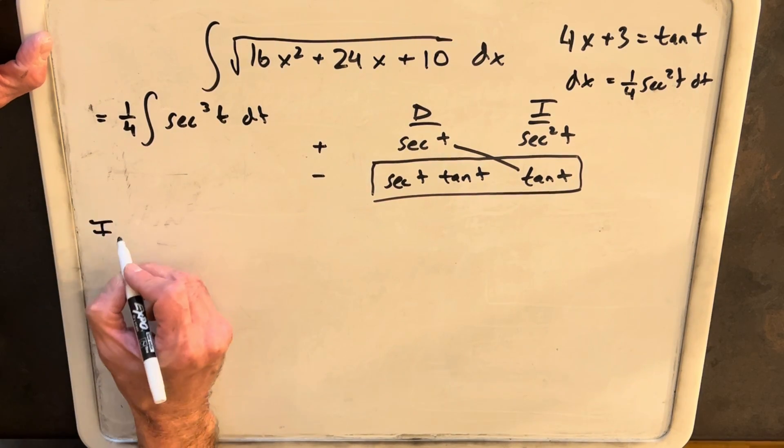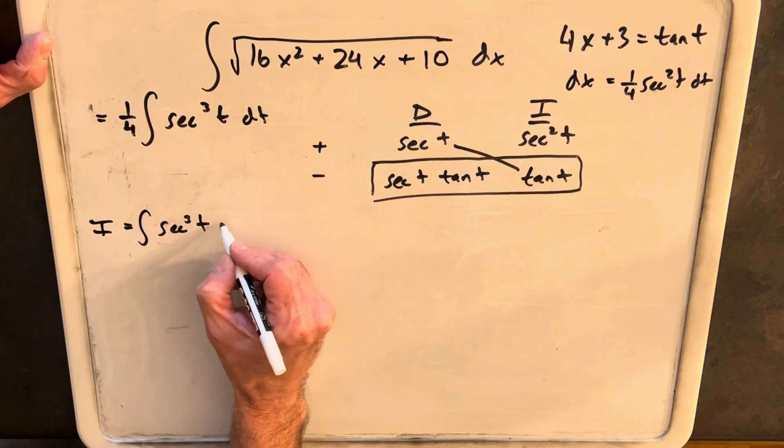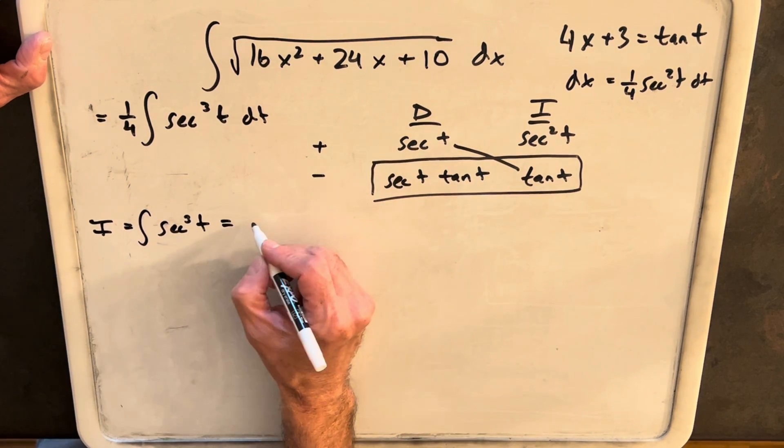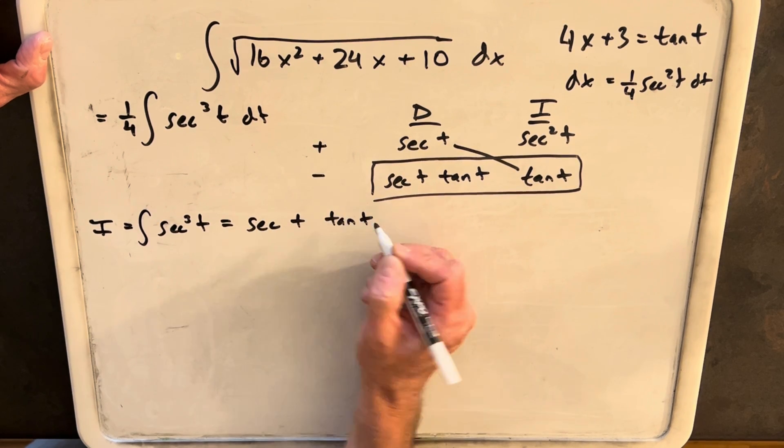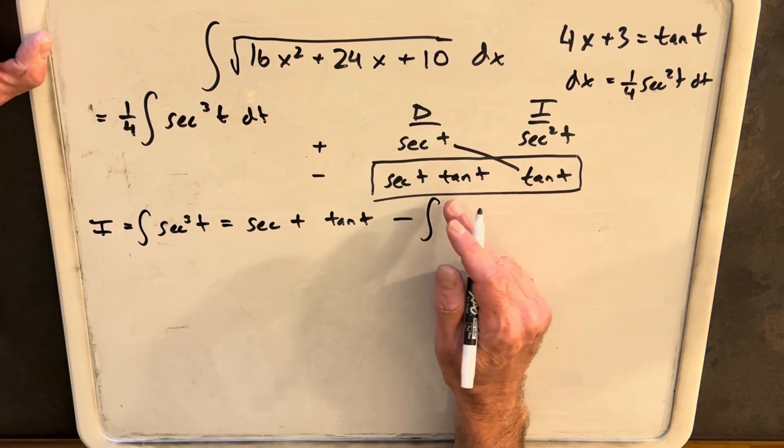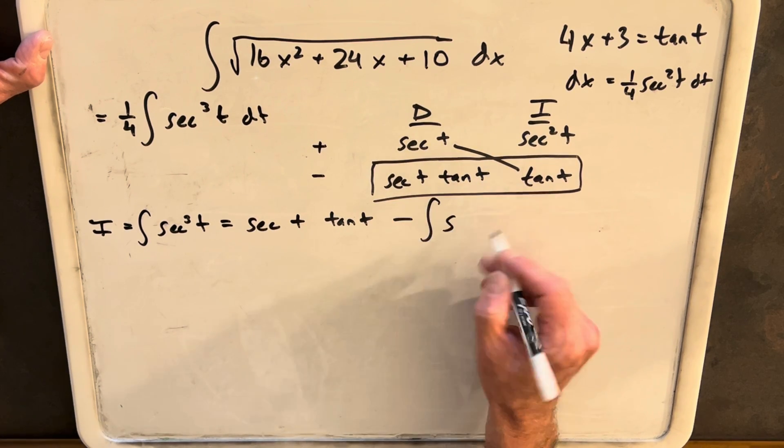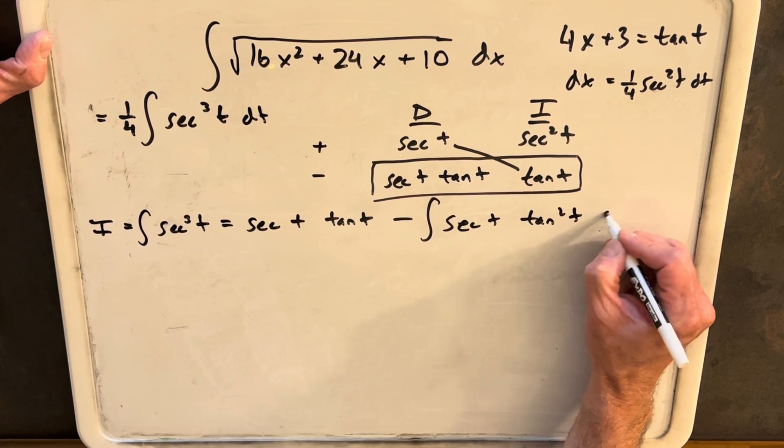So what I'm going to do, let's call this integral i. And that's going to be our integral of secant cubed t. And the first part is going to be this diagonal, secant t tan of t minus this integral. Let's multiply together the tangents. We'll have secant t tan squared t dt.